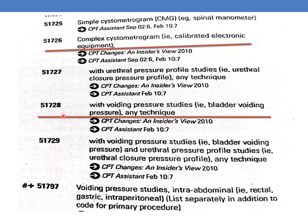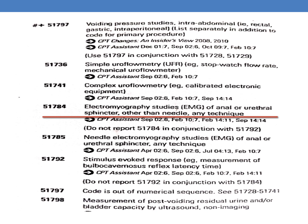Along with that, EMG is also performed. If you see further below, you can find EMG listed as 51784 — Electromyography studies: EMG of anal or urethral sphincter, other than needle, any technique.